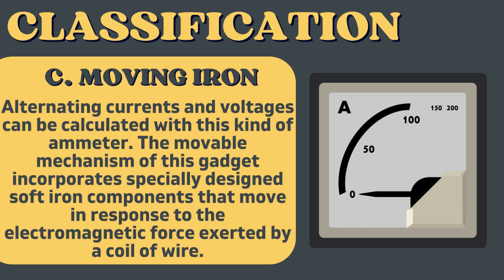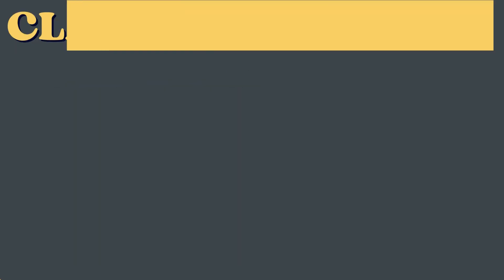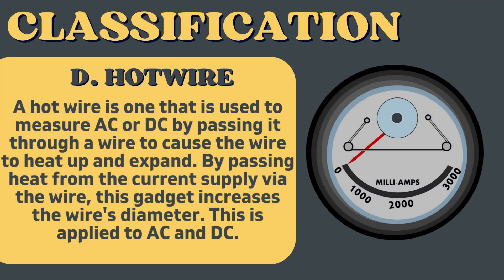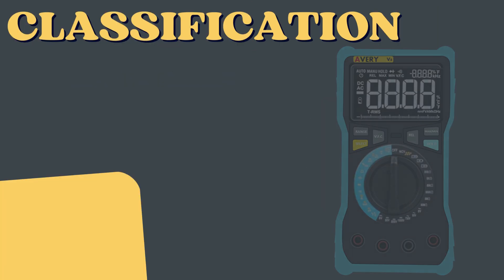The third classification is the moving iron ammeter, which can calculate alternating currents and voltages. Its movable mechanism incorporates specially designed soft iron components that move in response to the electromagnetic force exerted by a coil of wire. The fourth type is the hot wire ammeter, which measures AC or DC by passing current through a wire, causing it to heat up, expand, and increase in diameter.